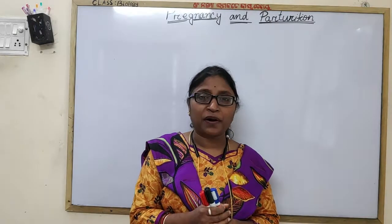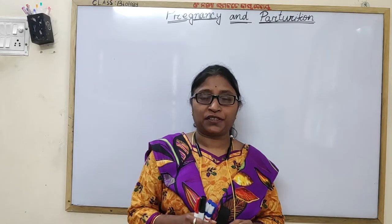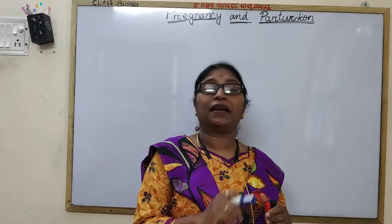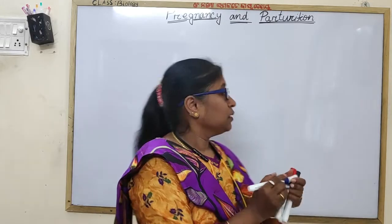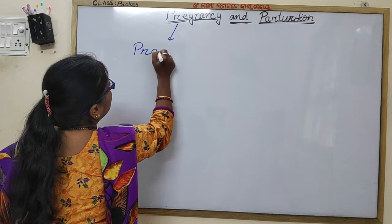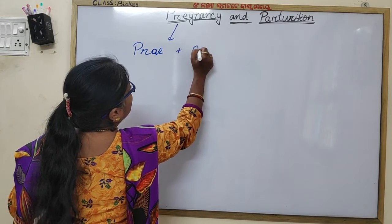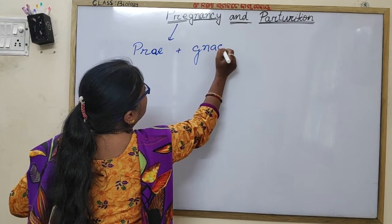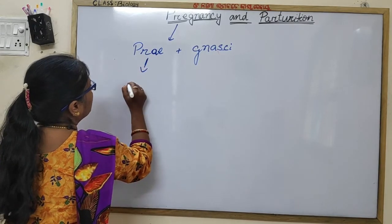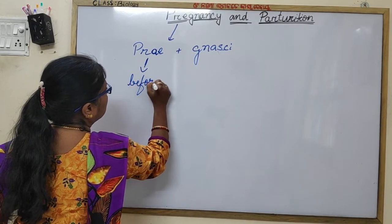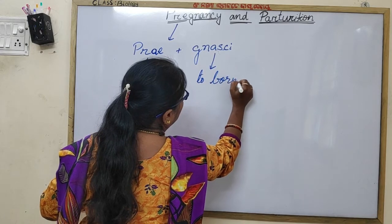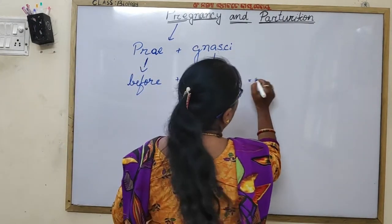In this session we will discuss pregnancy and parturition. Let us start with pregnancy. Pregnancy is a term derived from a Latin word: 'pre' plus 'gnasci' (G-N-A-S-C-I). 'Pre' means before, and 'gnasci' means to birth — that is, before birth.